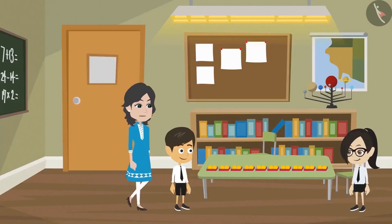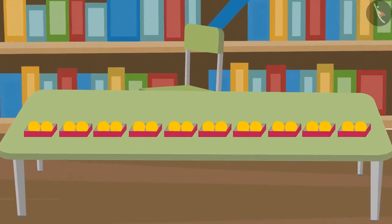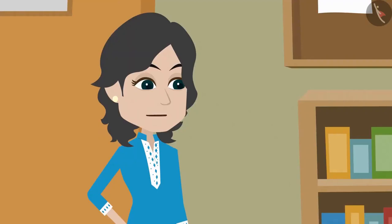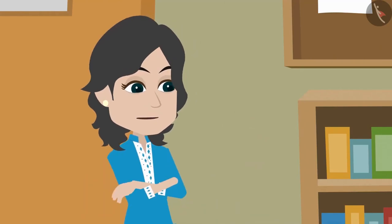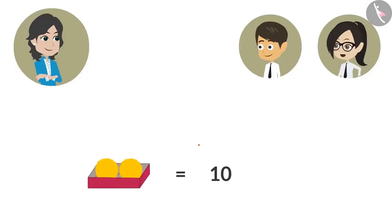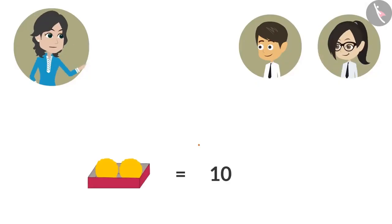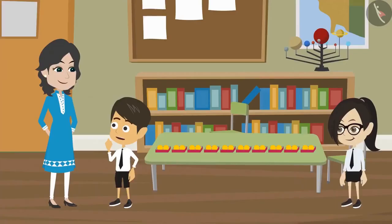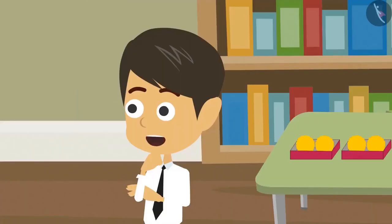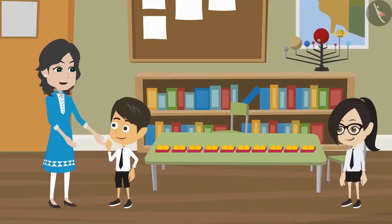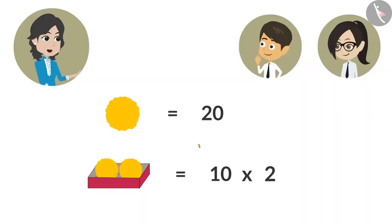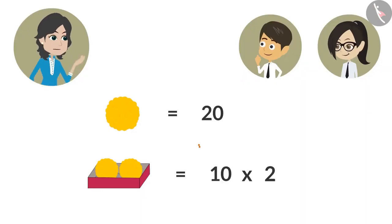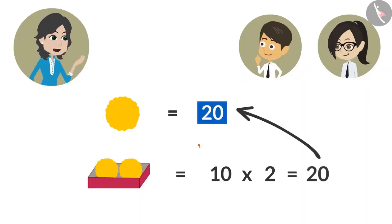Reyanj and Vandana, what are you counting? Madam, there are two ladoos in each of these boxes. We are trying to find the total number of ladoos in these boxes. That is very easy. Now Vandana, tell me how many boxes of ladoos are there? We have a total of ten boxes. That means you have a total of twenty ladoos. I have multiplied two with the number of boxes, so I got to know that there are twenty ladoos in ten boxes.